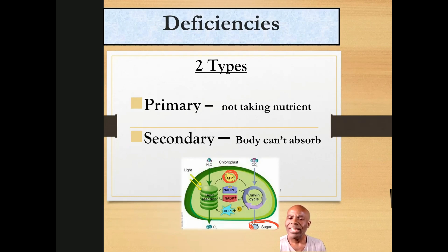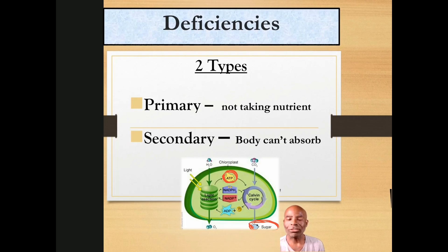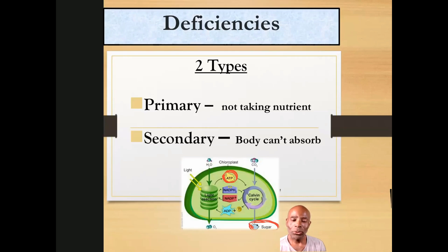A secondary deficiency is when something is going on with the body where it can't absorb those vitamins and minerals or utilize them. That could be a number of things — it could be a digestive issue, or it could be a poorly manufactured nutrient. Sometimes manufacturers put what they call fillers in vitamins and minerals, and those fillers are not actually the nutrient.